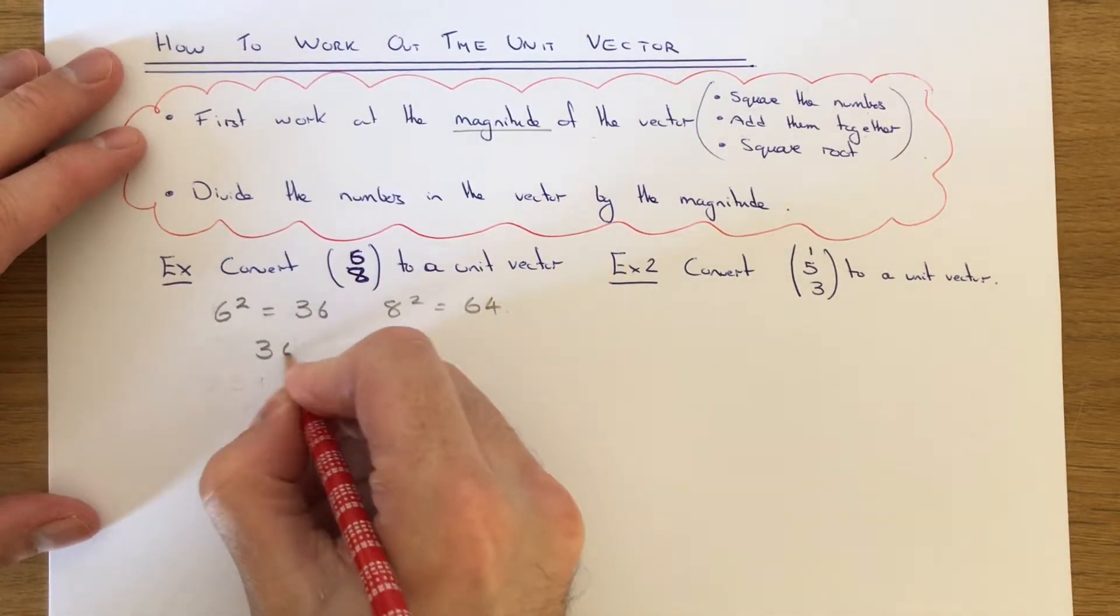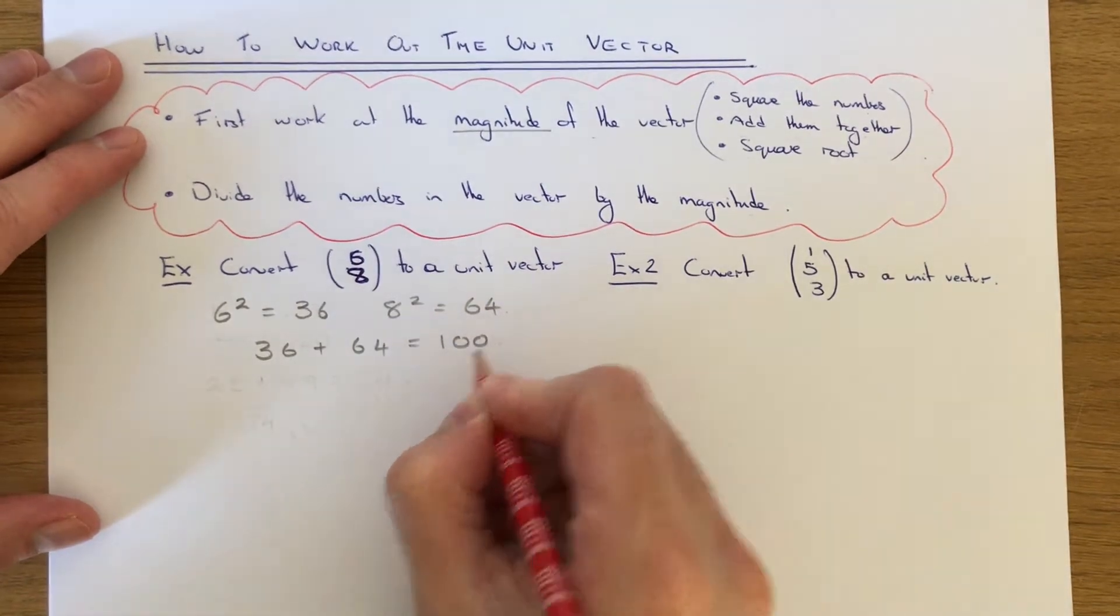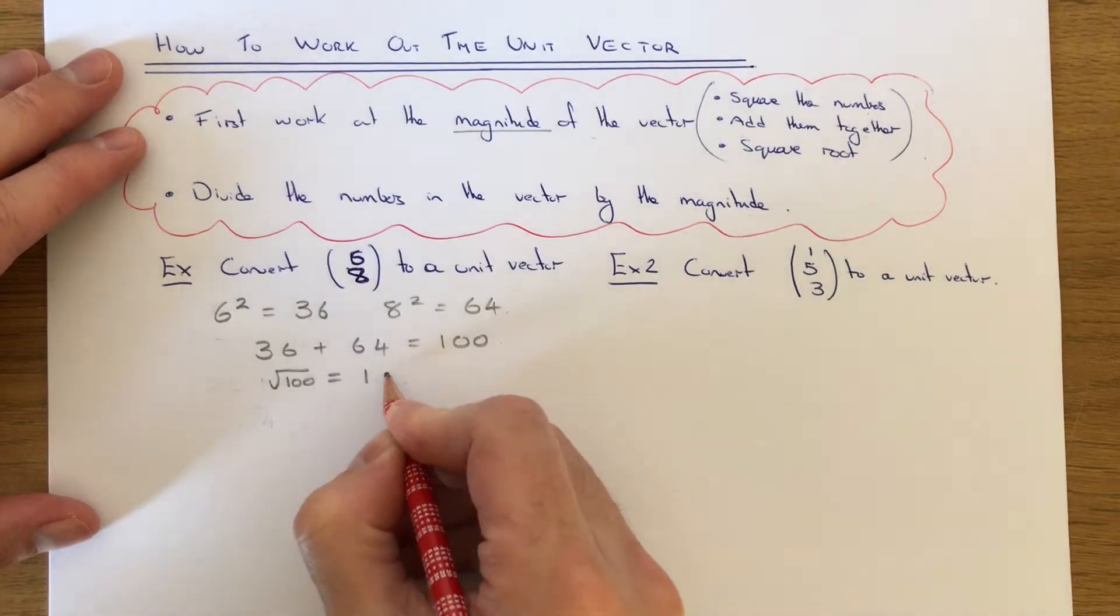If we add these two numbers together, that will give us 100, and the square root of 100 is 10.